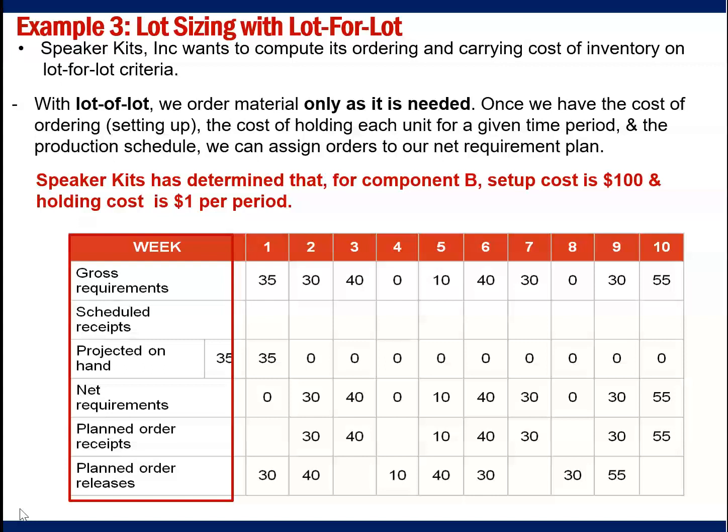Kids Incorporation has determined that for component B, setup cost is $100 and holding cost is $1 per period.